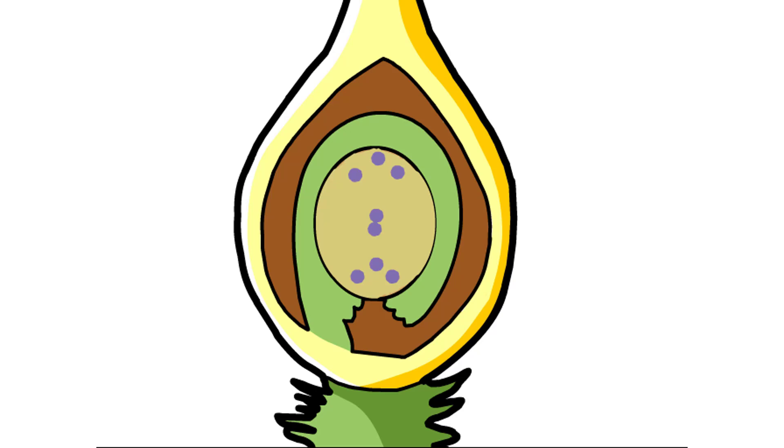Cytoplasmic divisions do not immediately follow the nuclear divisions, so the eight nuclei initially share the same cytoplasm. This multinucleate structure is called the embryo sac.